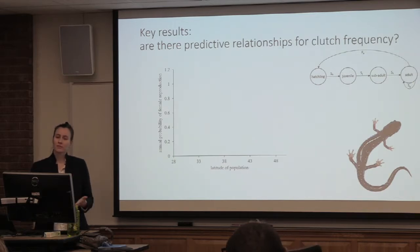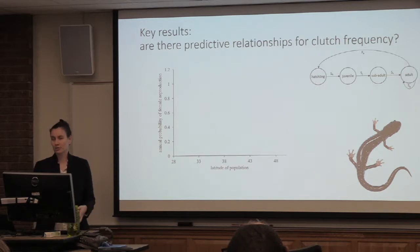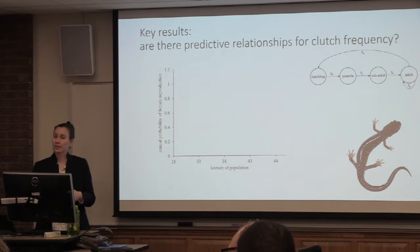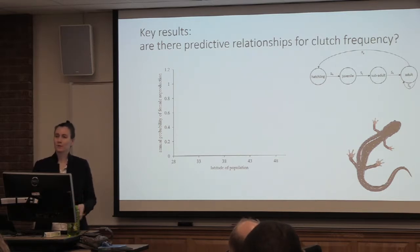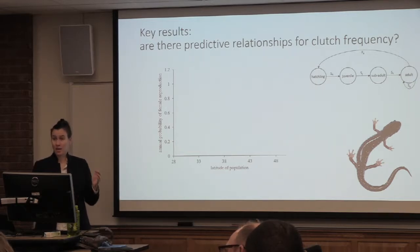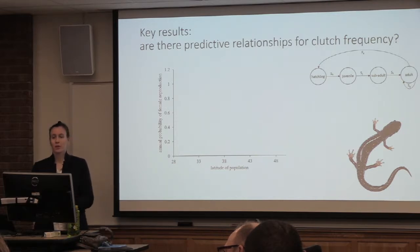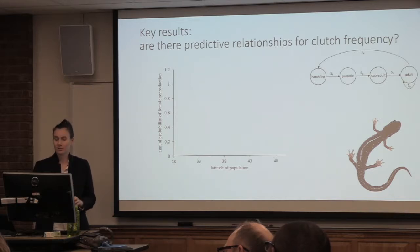And then we asked: are there predictive relationships for clutch frequency? Clutch frequency refers to the proportion of females in the population that are breeding in a given year. These are capital-breeding animals, which means they breed at a specific time of year — for our guys in the Southern Appalachians, it's spring, typically May and June. For the rest of the year they're accumulating resources. In spring, if they have enough resources to produce a clutch of eggs, they will; but if they don't, they'll wait an entire other year.